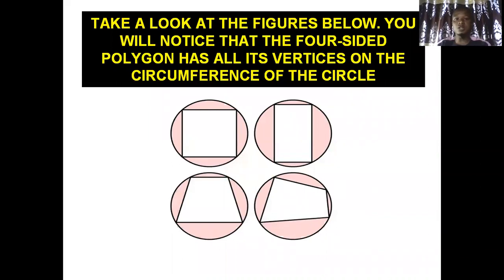Take a look at the pictures below. You will notice that there are shapes inside the circles, and if you count the number of sides these shapes inside the circles are having, you'll find out that all of them have four sides. It has four sides. And whenever you find out that a shape has four sides, the shape is called a quadrilateral. And these quadrilaterals are inside the circle, with all vertices touching the circumference of the circle.